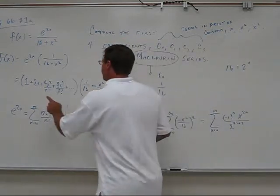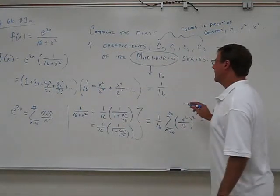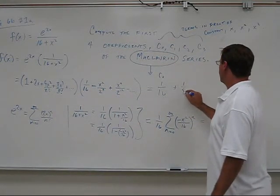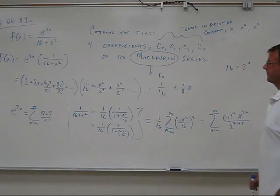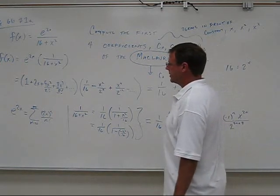How do I get the x term? I have a 2x, and I multiply by this 1 16th. That gives me 1 8th x. And there's no other way to get an x term.